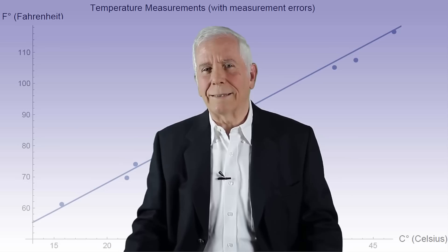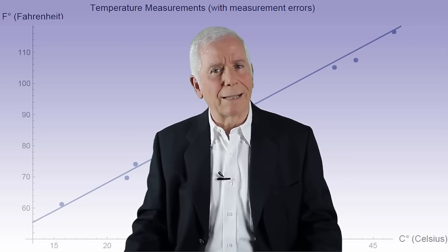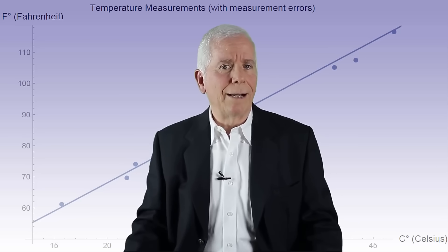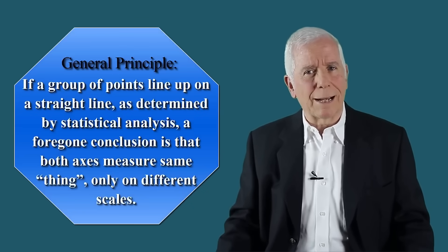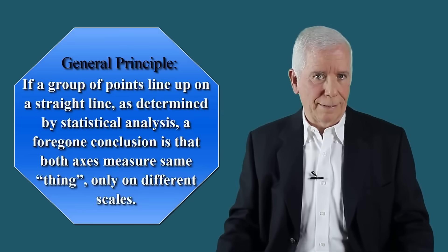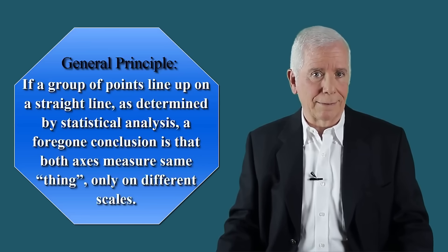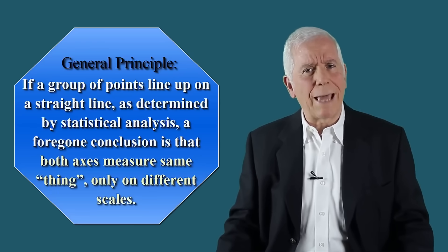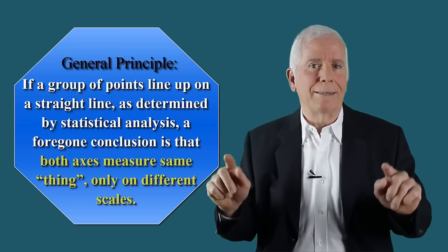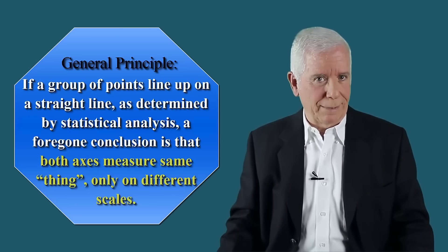The statistical technique that performs this analysis is denoted linear regression. We can now generalize. If a group of points line up on a straight line, as determined by statistical analysis, a foregone conclusion is that both axes measure the same thing only on different scales.